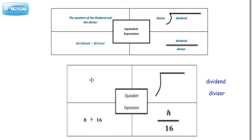Now if we have to put this in word form, we might say something like H divided by 16 or we might say the quotient of H and 16. There are a couple options, but I think probably the easiest one is H divided by 16.